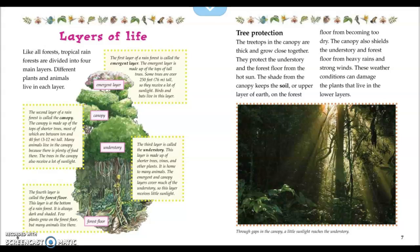The tree tops in the canopy are thick and grow close together. They protect the understory and forest floor from the hot sun. The shade from the canopy keeps the soil, or upper layer of earth, on the forest floor from becoming too dry. The canopy also shields the understory and forest floor from heavy rains and strong winds, which can damage the plants that live in the lower layers. The caption says: through gaps in the canopy, a little sunlight reaches the understory.